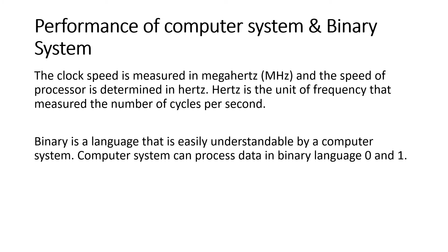Performance of a computer system — computer performance can be measured by how much speed it can process within a particular time bound. The speed of a computer system can be measured in megahertz, represented as MHz, and the speed of a processor is determined in hertz. Hertz is the unit of frequency that measures the number of cycles per second — in one second, how many cycles are performed by the computer system.